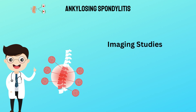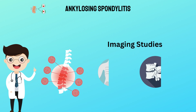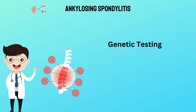Imaging studies such as X-rays or MRI scans can be used to look at the bones and joints in more detail than a physical exam allows. This helps doctors identify any changes that may have occurred due to AS, such as fusion between vertebrae or narrowing of spinal spaces caused by inflammation. A genetic test known as HLA-B27 can be used to confirm a diagnosis of AS if other tests come back inconclusive. This test looks for an inherited gene associated with an increased risk for developing AS, which can help confirm a diagnosis.